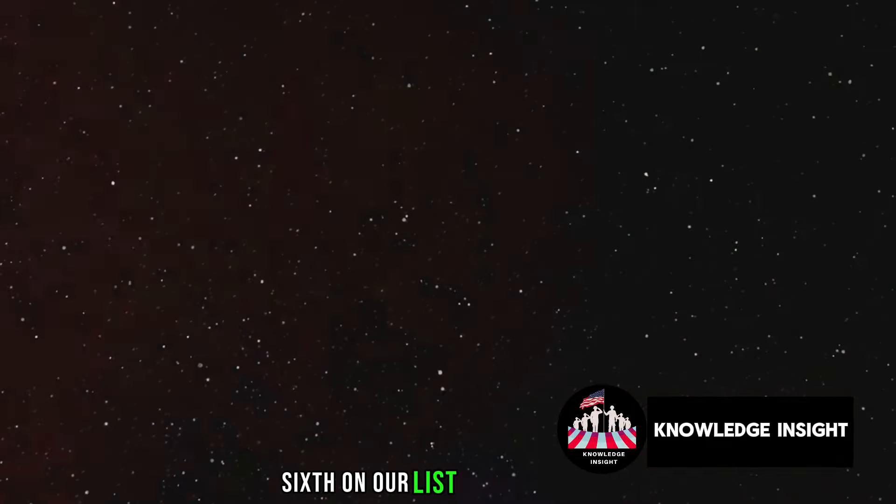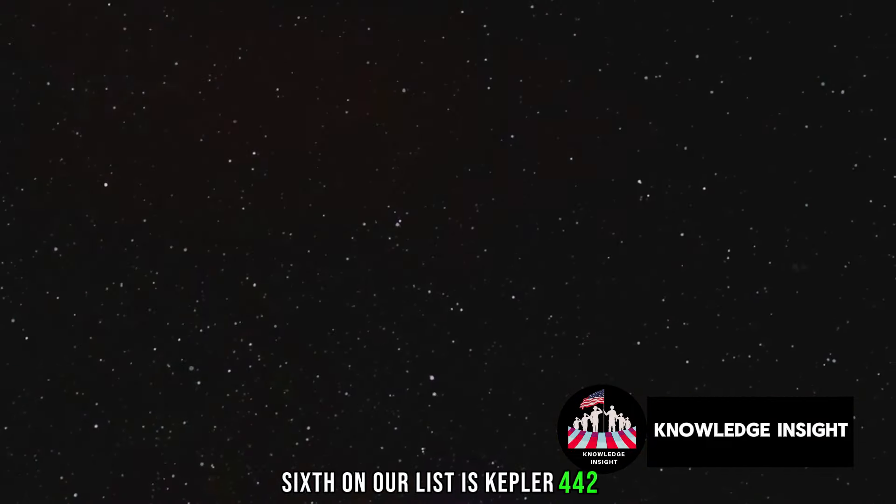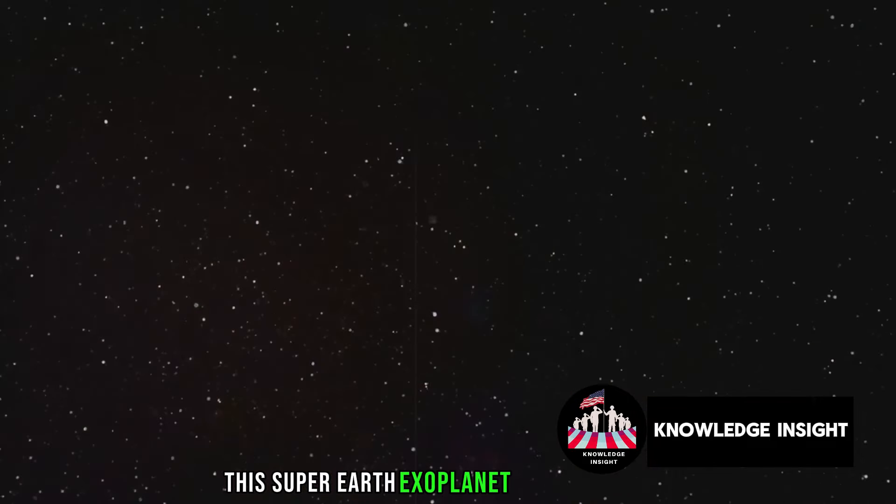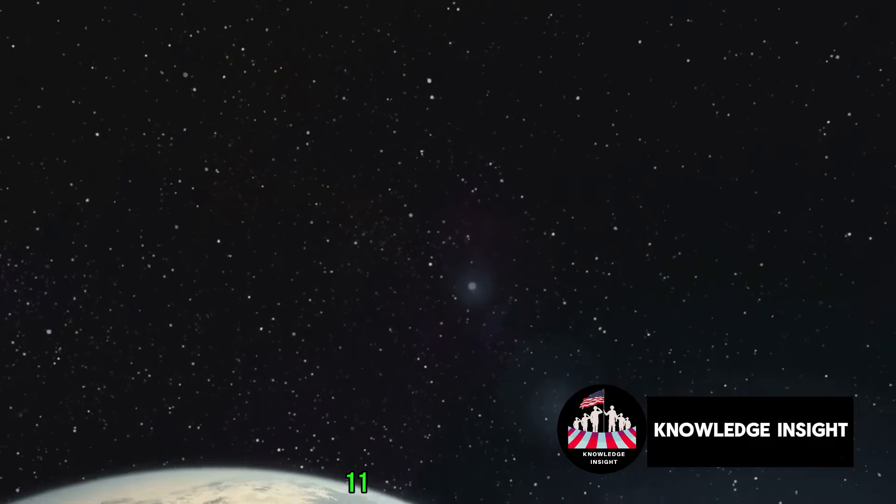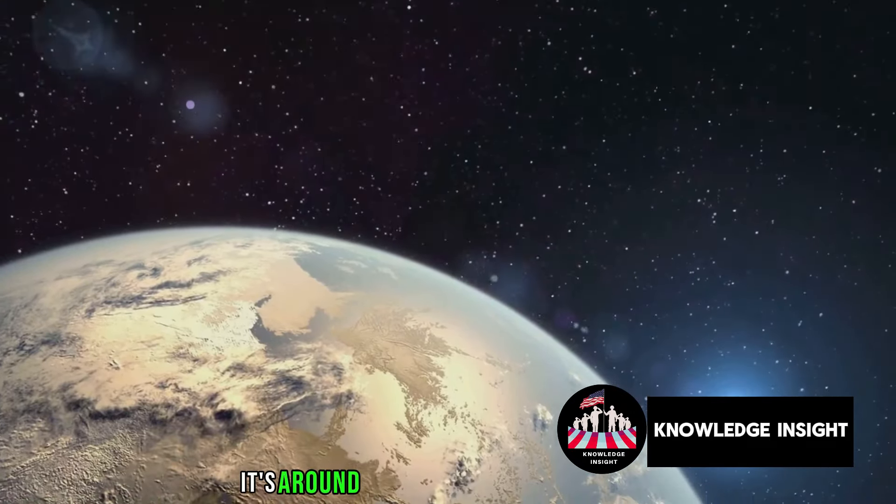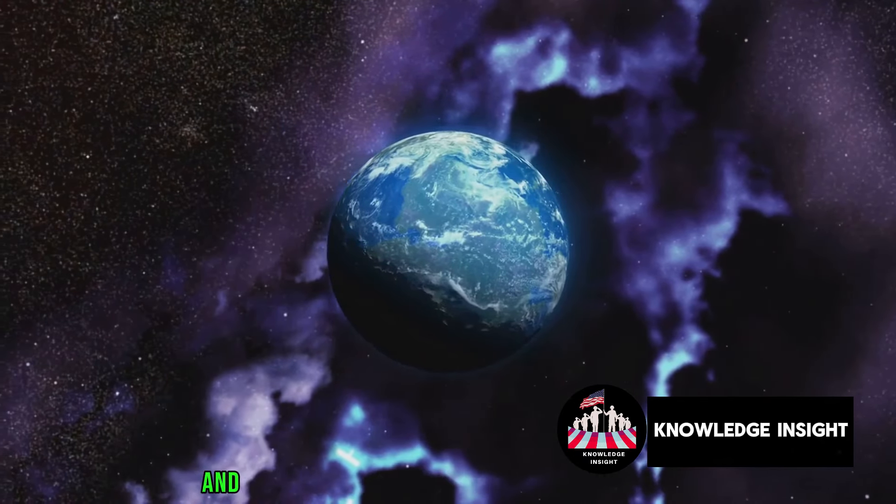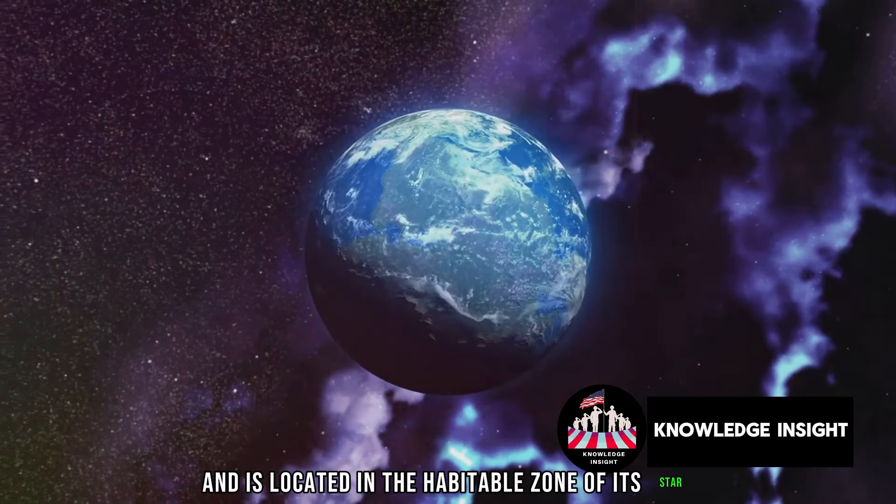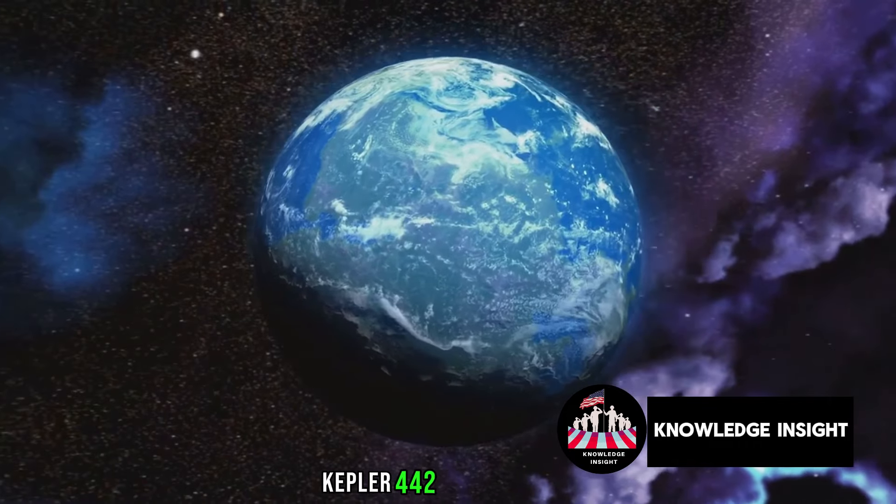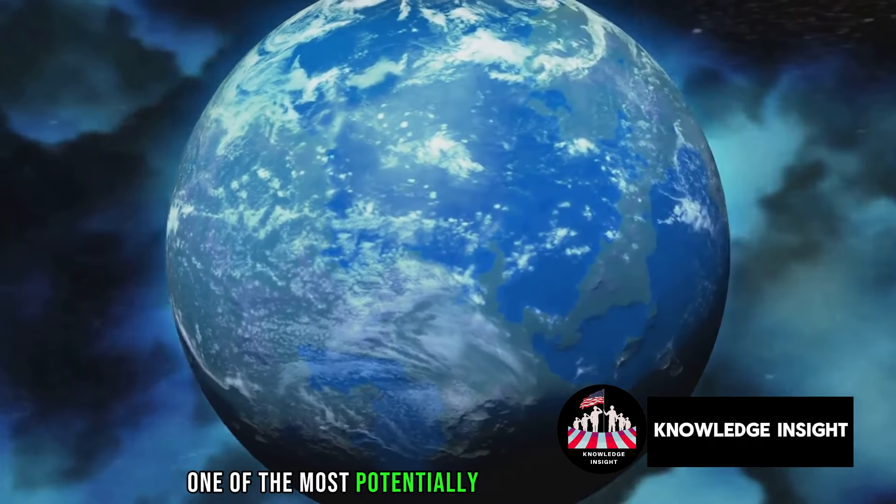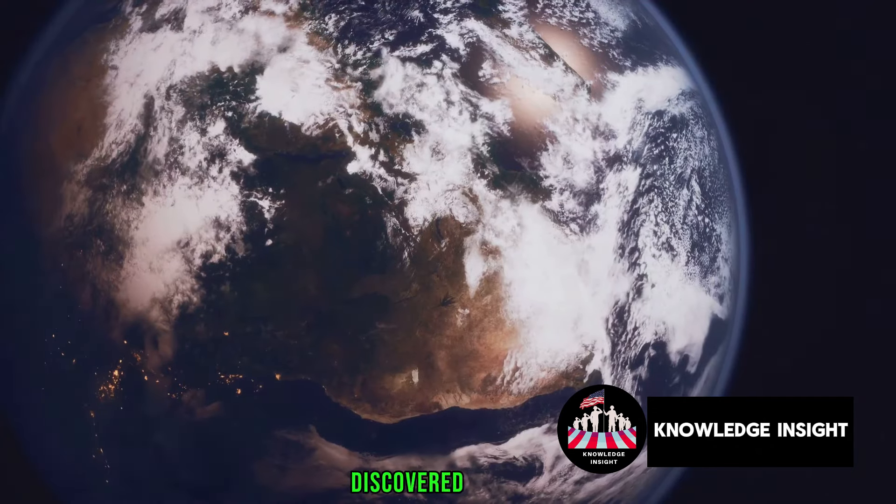Sixth on our list is Kepler-442b. This super-Earth exoplanet is located over 1,100 light-years away. It's around one-third larger than Earth, and is located in the habitable zone of its star, Kepler-442. This makes it one of the most potentially habitable exoplanets discovered to date.